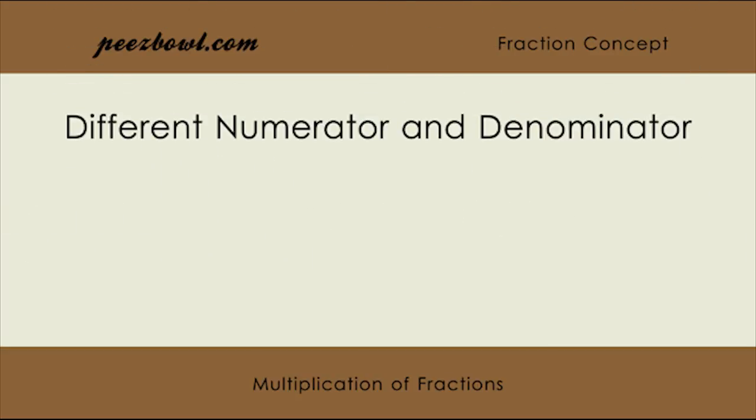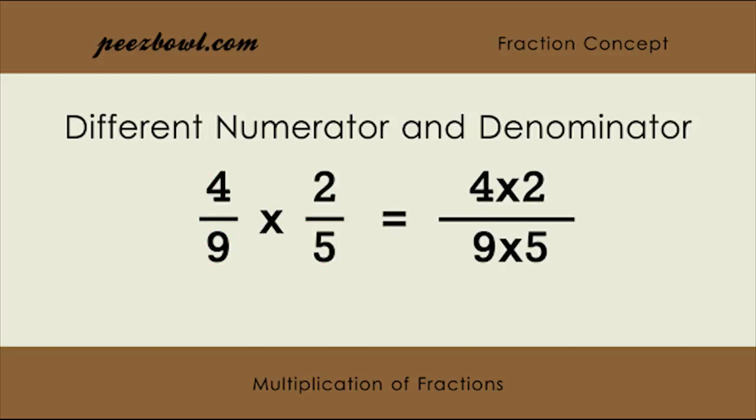Let us see one more example. Here, we have fractions with different numerators and denominators. We are multiplying 4/9 and 2/5. By multiplying numerators and denominators separately, the result of this multiplication is 8/45.